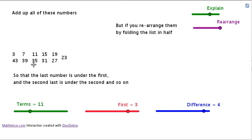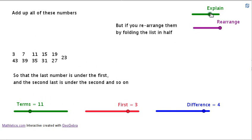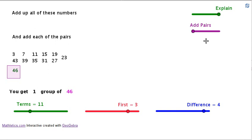We line them up like that. Because we've got an odd number of terms, 11 terms, we've got one sitting over here by itself in the middle. We'll leave that there by itself. Then we're going to add these numbers in pairs. 3 and 43 add to 46. The second term, 7 and 39, also add to 46.